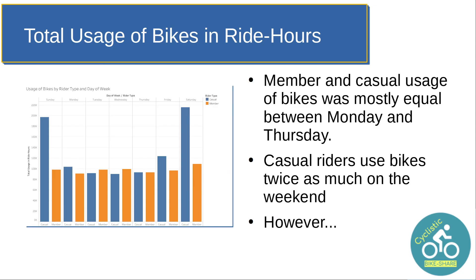This is the representation of the total usage of the bikes in ride hours — kind of like man-hours, except for bikes. We see that during the week between Monday and Thursday, members and casual riders had roughly equal usage. That doesn't say much for Mike and Clara individually, simply because there are many more casual riders than members. And we do see that casual riders use the bikes twice as often on the weekend. The reason I show this has to do with the next slide.